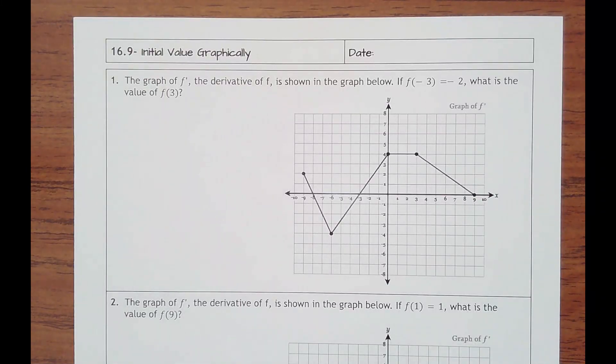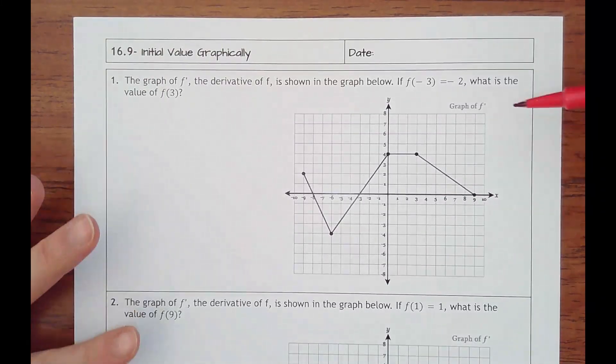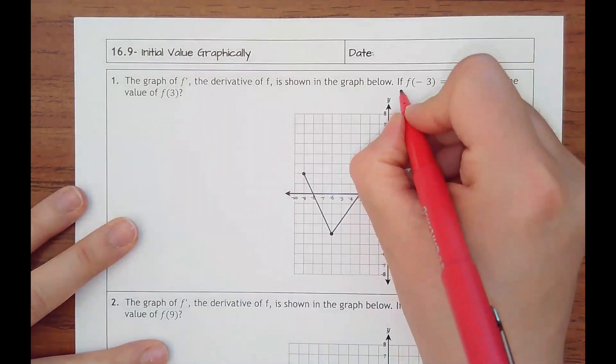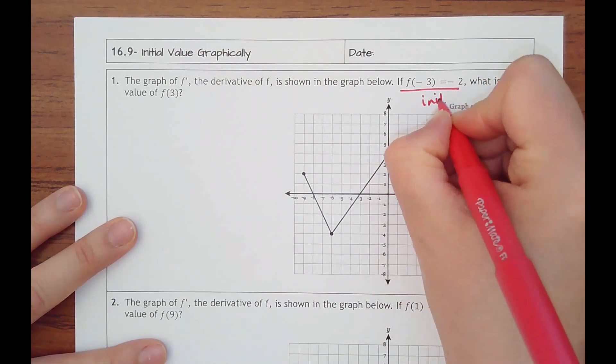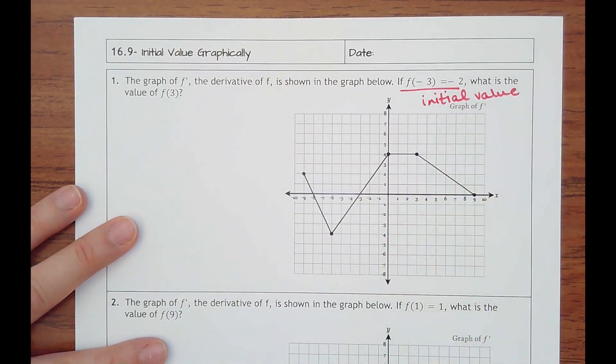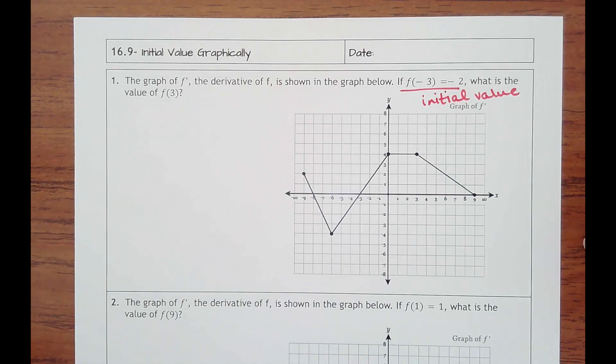Lesson 16.9, initial value graphically. The graph of f prime, the derivative of f, is shown in the graph below. If f of negative 3 equals negative 2, what is the value of f of 3? So this is an initial value, just like we were doing in the last lesson. That's like telling you where your money or whatever your amount is starting at, and then we're having the rates of change be added or subtracted to that.